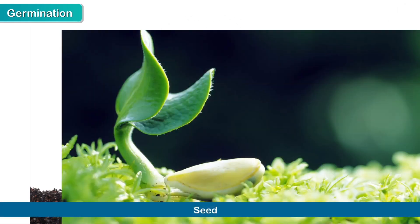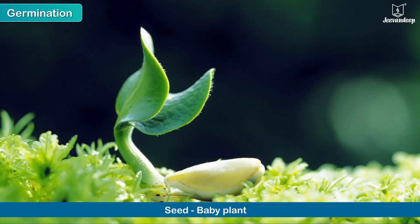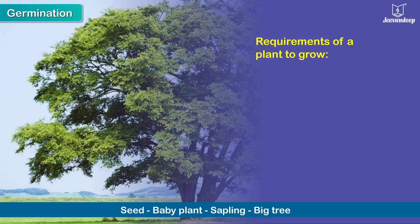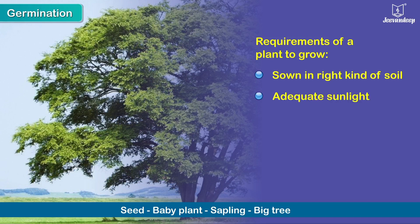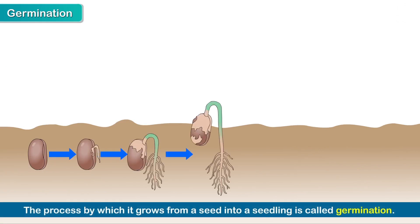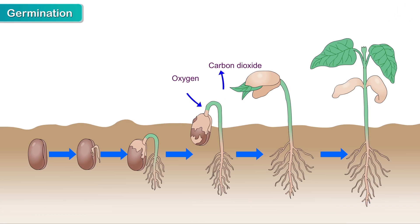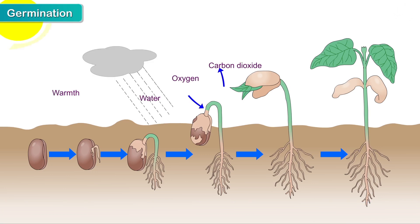Germination. A seed contains a baby plant inside it. This baby plant will grow into a small sapling and later into a big tree only when it is sown in the right kind of soil and receives adequate sunlight, fresh air and water. The process by which it grows from a seed into a seedling is called germination. For this, it needs air, water and warmth.